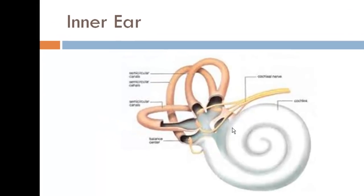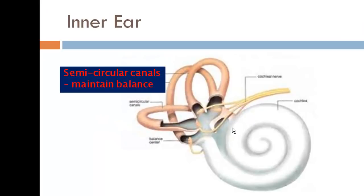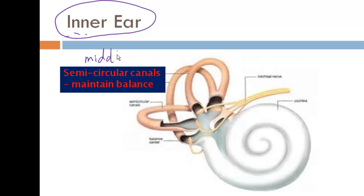Another component of the middle ear — I'll show a better picture of this. Even though it says inner ear, this component is in the middle ear: the semicircular canals. Just like the eustachian tubes, they're not really part of the hearing pathway, but they're part of the middle ear, which is pretty important because these have fluid inside them that works like a level to help you maintain your balance.